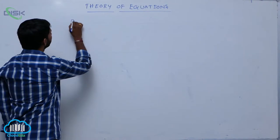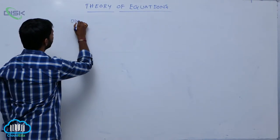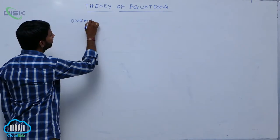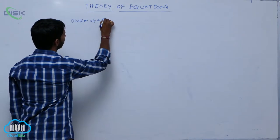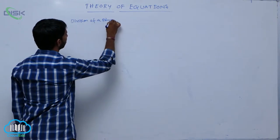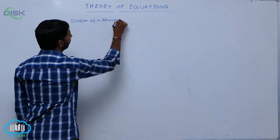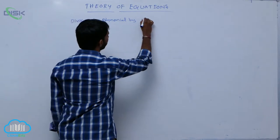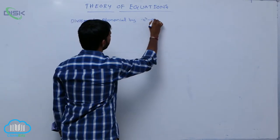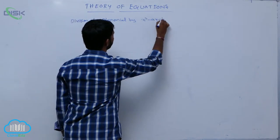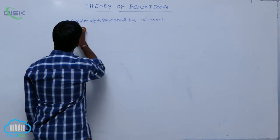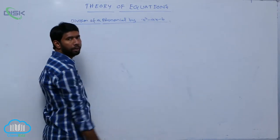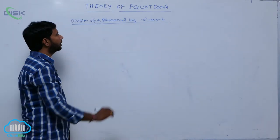And next, we go to division of a polynomial by x squared minus ax minus b.